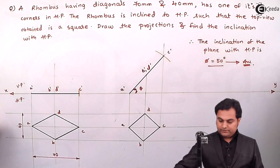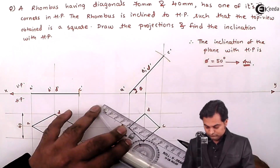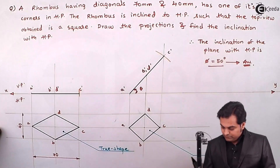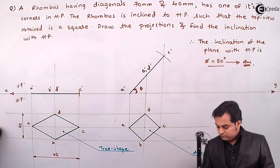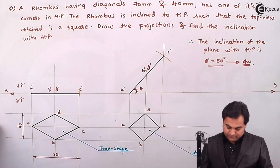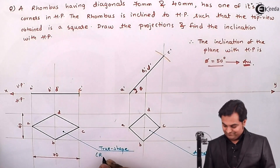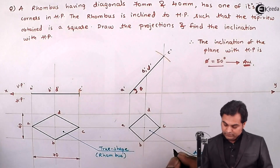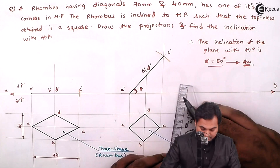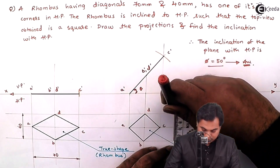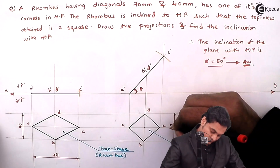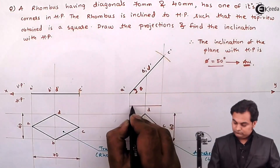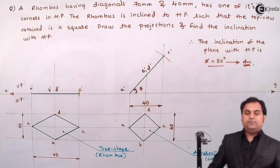This is the true shape. Here is the apparent shape. The true shape was a rhombus and the apparent shape is the square, and now the diagonals are equal — that is 40 mm by 40 mm. With this, the problem gets completed.